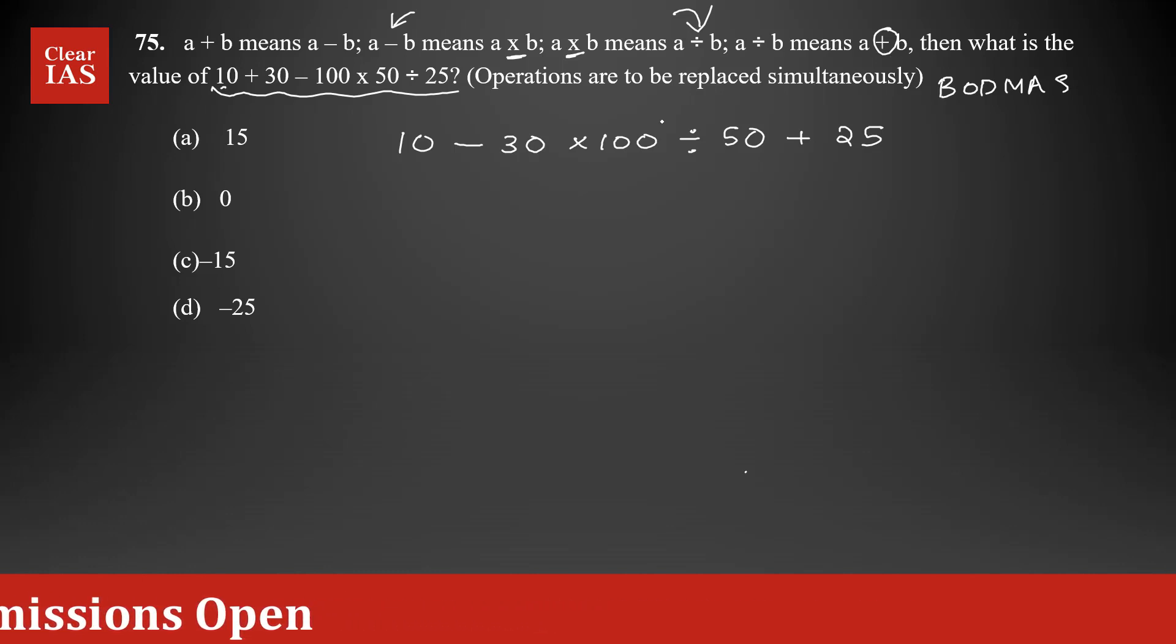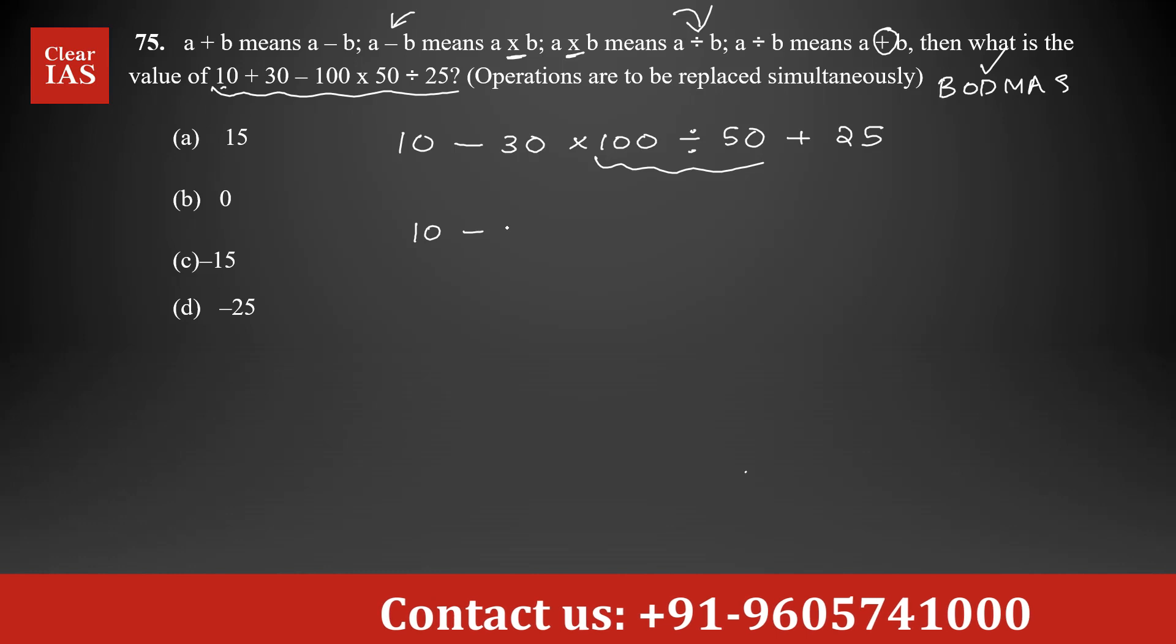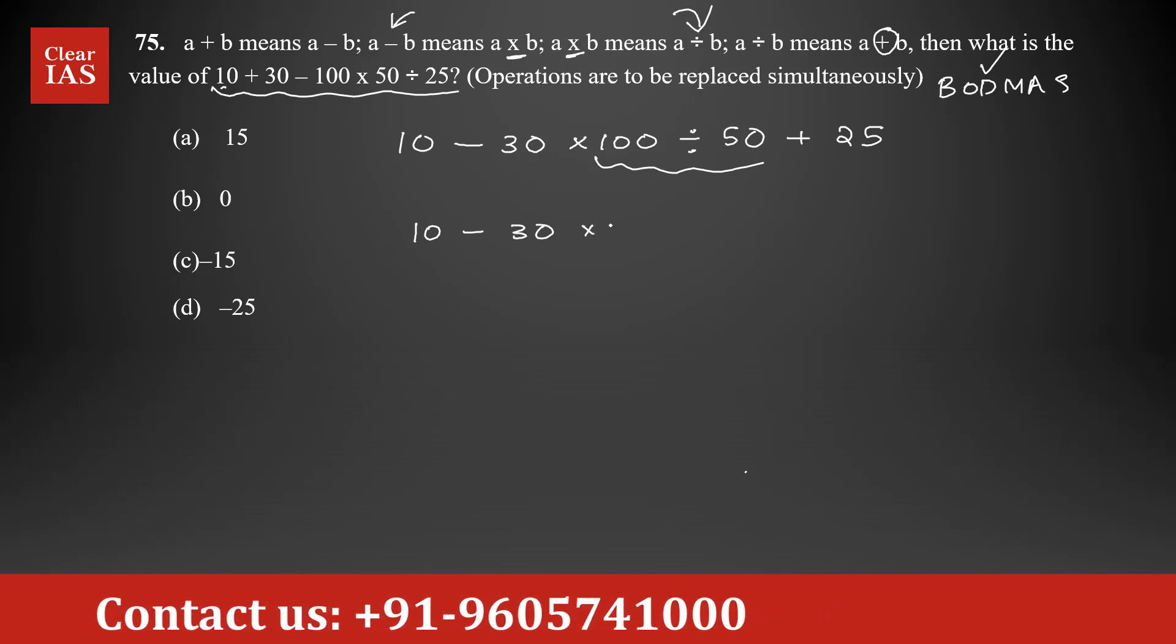Let's start with the division here. This is the first operation we're going to do. 100 divided by 50 is 2, so it's going to be 10 minus 30 multiplied by 2 plus 25.